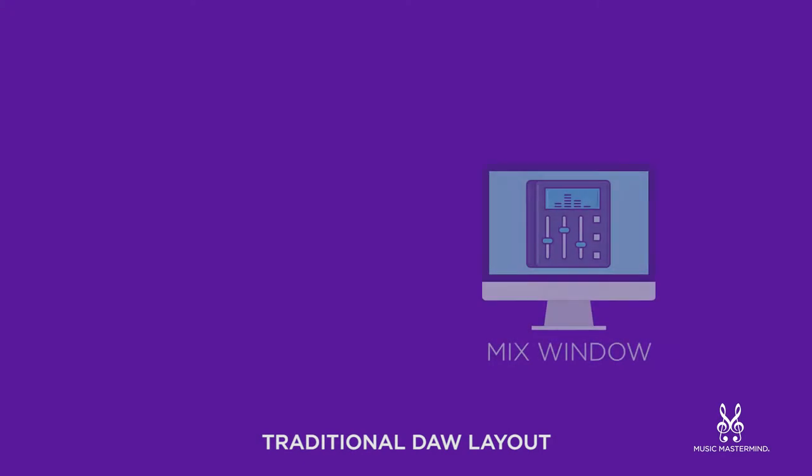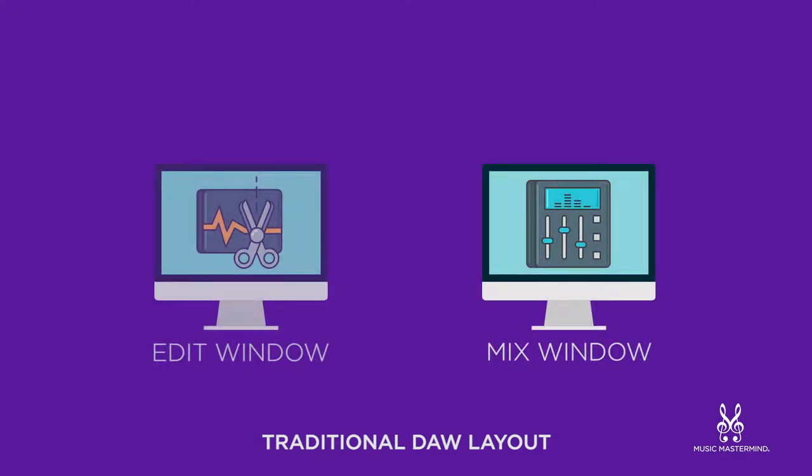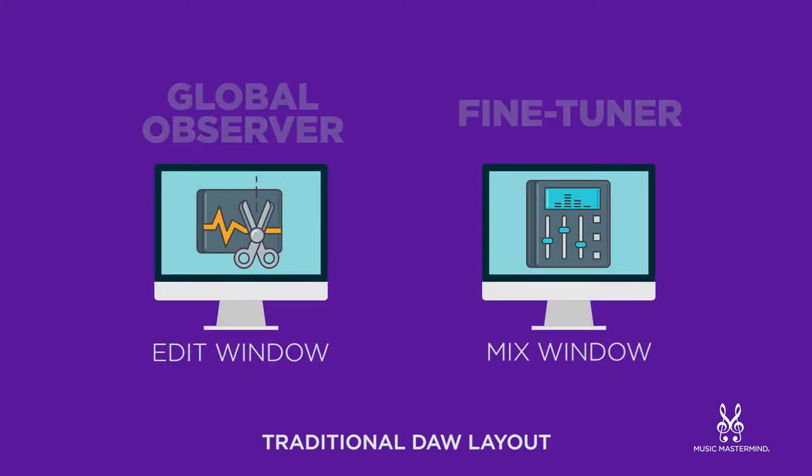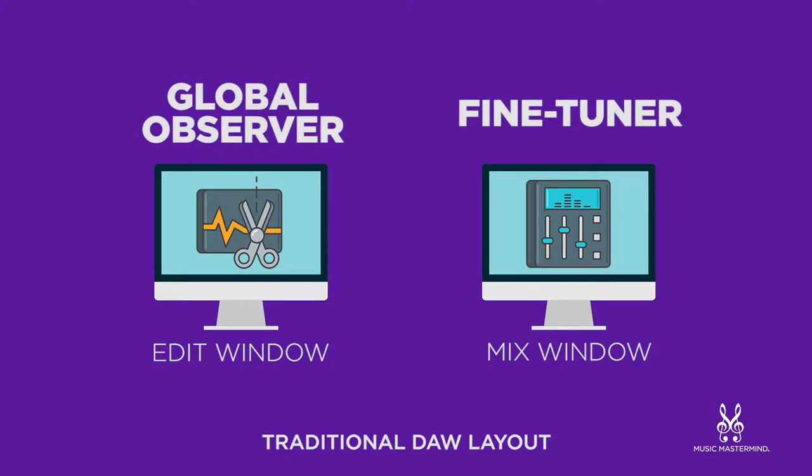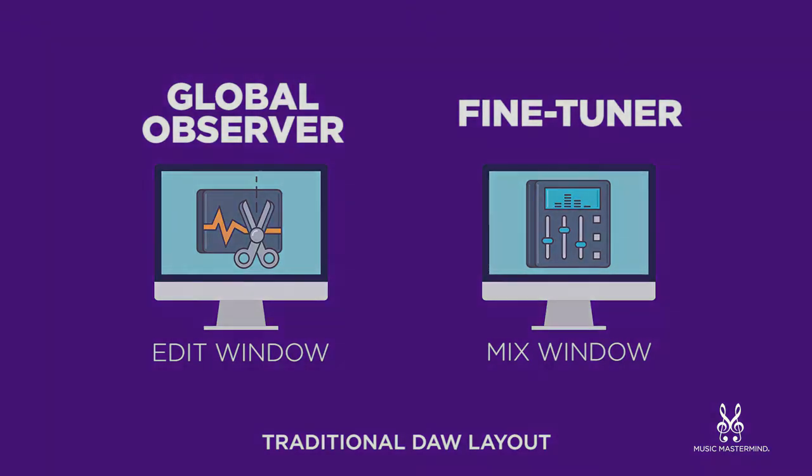That all depends on your workflow and what you're trying to accomplish. Having multiple screens to work with can be extremely beneficial as it can save you a lot of time, instead of the regular swapping of different screen elements back and forth. In traditional scenarios, most people will use two screens — one to house the mix window and another one to show the edit window. You can think of the left screen as a global observer and the right screen as a fine tuner.